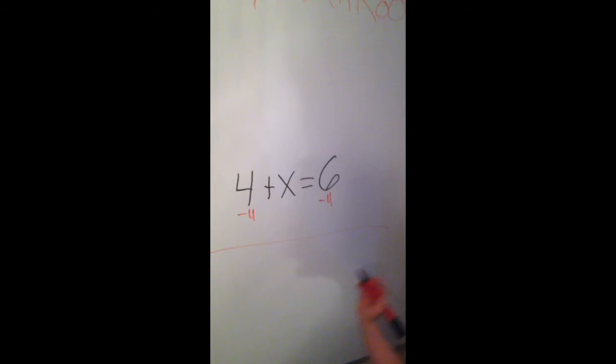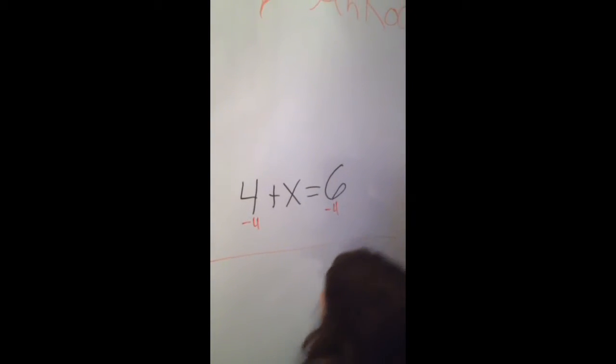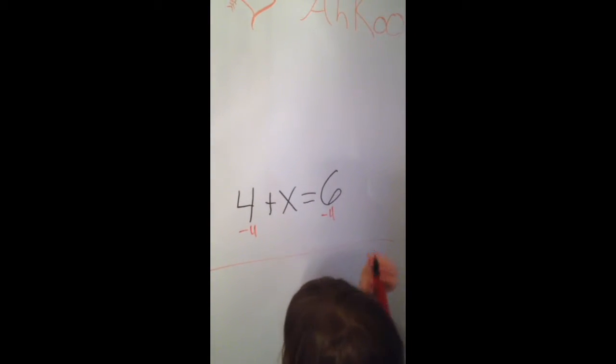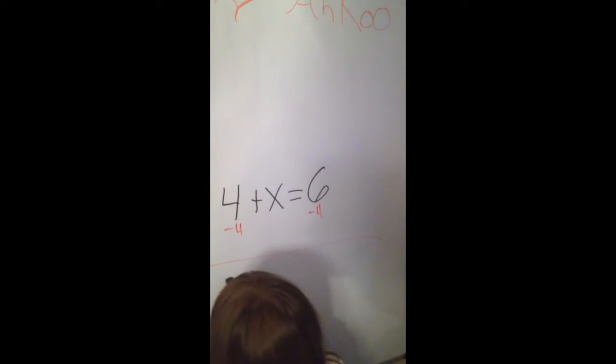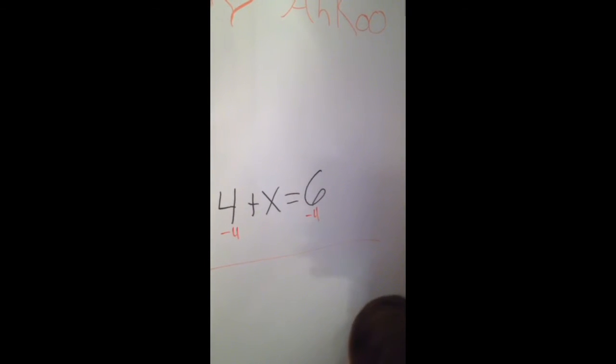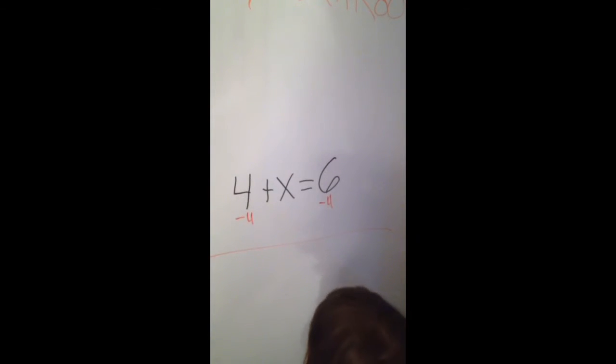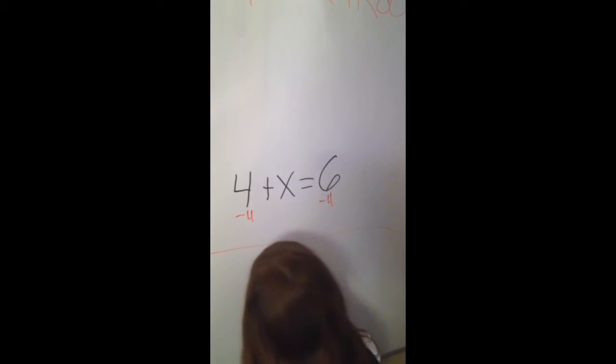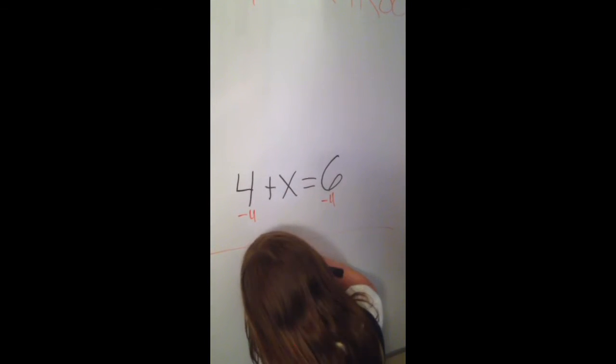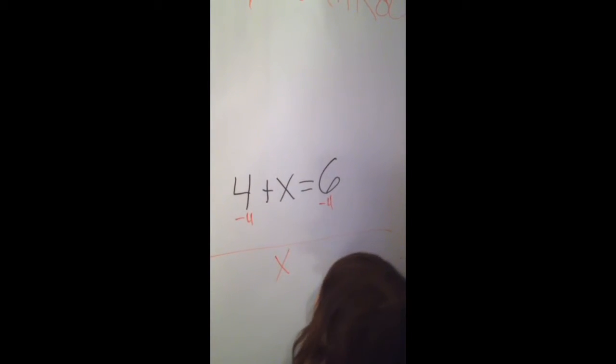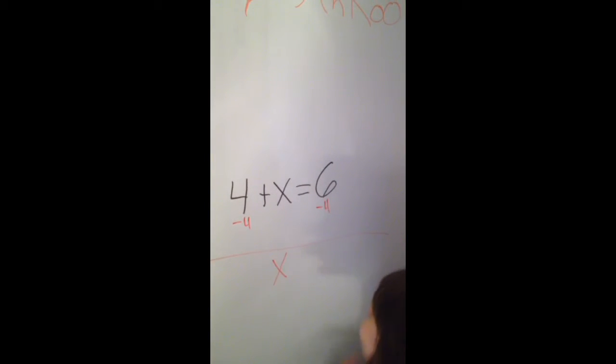Did you get it? Yep. We have to draw the line. Then what comes down? The answer. So we bring down the x over here. And then we take away 4 from 6.